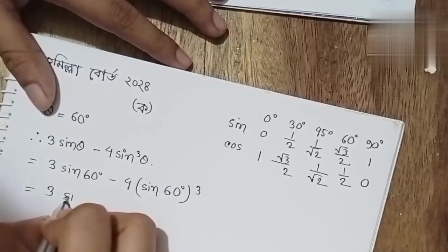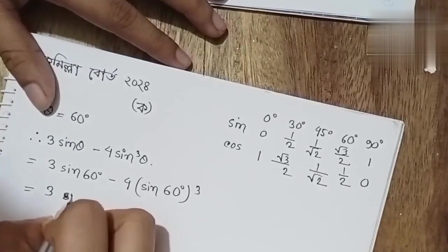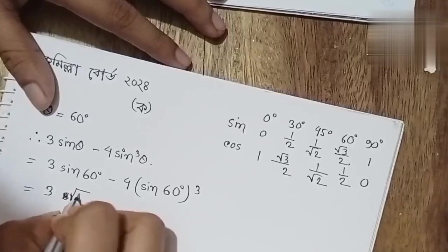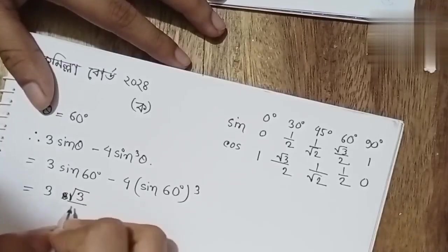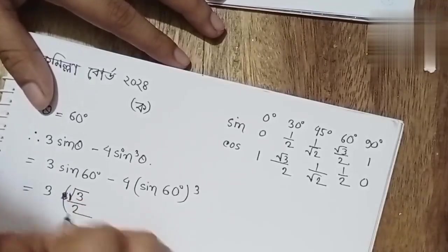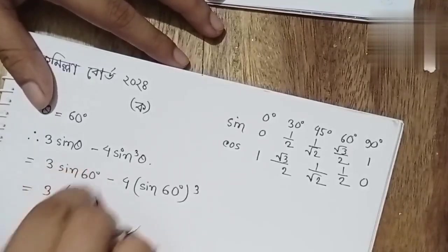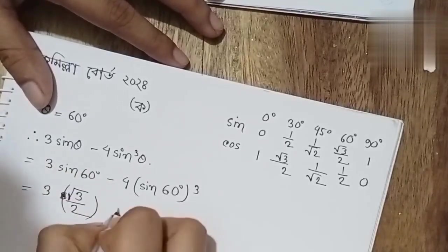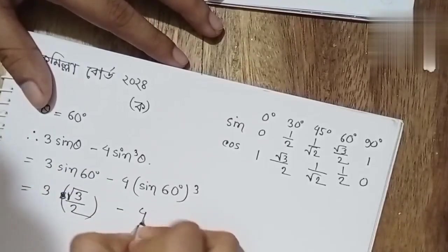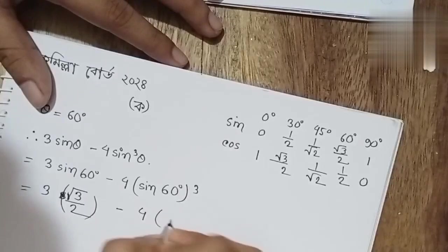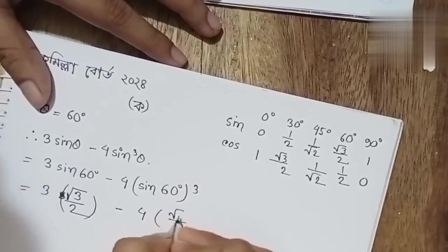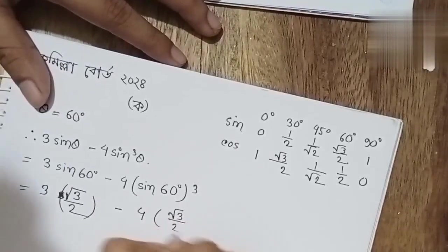Sin 60 degree root 3 by 2. So the expression is: 1 minus 4 into root 3 by 2 whole cube.